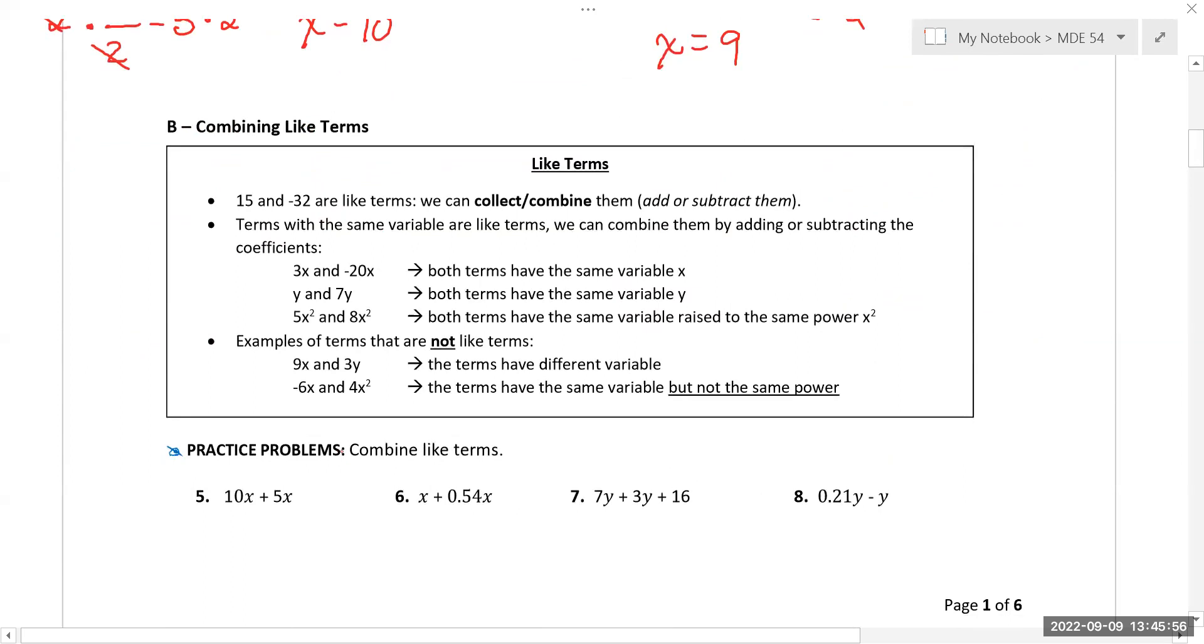The next item is, what if you have variables in multiple places? Well, if they're on the same side, you can add and subtract like terms—you collect them. You already do this with numbers. When you have something like 15 minus 32, those are like terms—they're both just regular numbers. So like terms would be an x and an x, a y and a y, an xy with an xy, but not an x squared with an x.